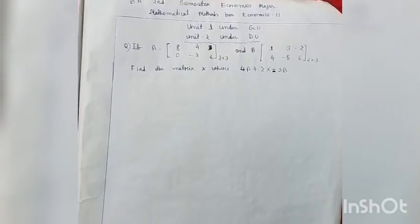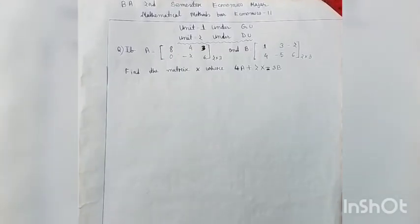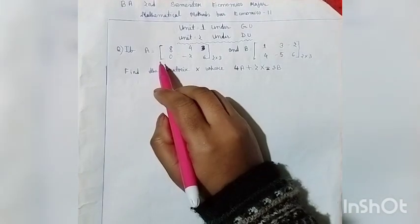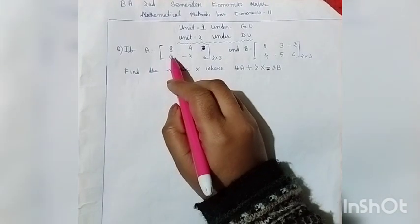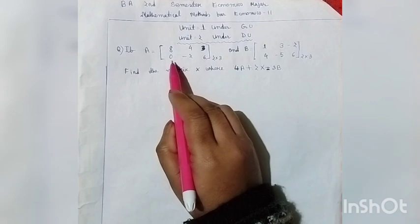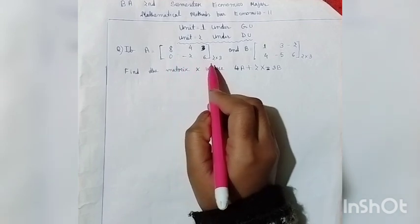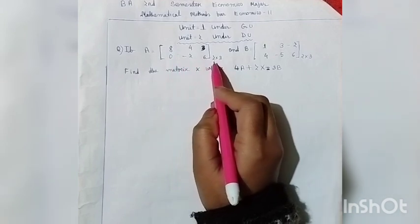That's the topic of our discussion — Question 2. This is matrix A and matrix B. We will call the solution matrix X. Matrix A has elements 8, 4, and 3 in the first row, and 0, minus 2, and 6 in the second row. This is a 2 by 3 dimensional matrix.